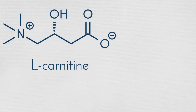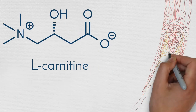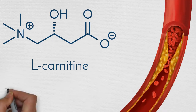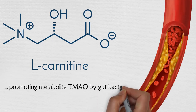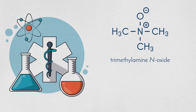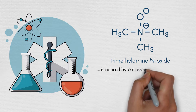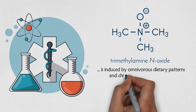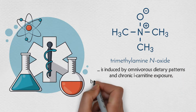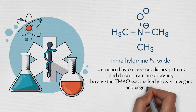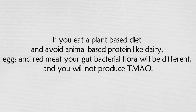In humans, dietary L-carnitine is converted into the atherosclerosis and thrombosis-promoting metabolite TMAO by gut bacteria. TMAO is induced by omnivorous dietary patterns and chronic L-carnitine exposure, as TMAO was markedly lower in vegans and vegetarians. If you eat a plant-based diet and avoid animal-based protein like dairy, eggs, and red meat, your gut bacterial flora will be different and you will not produce TMAO.